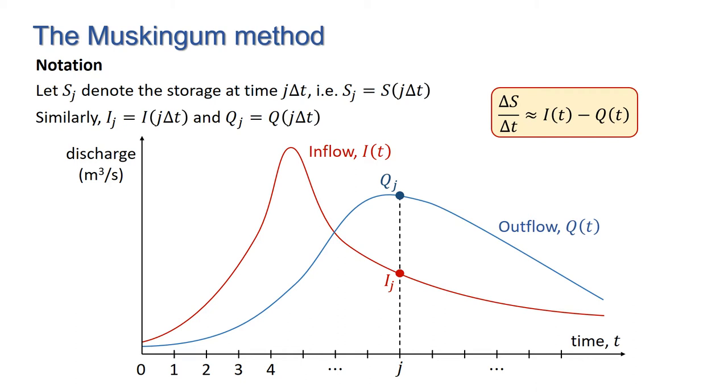We're going to derive a formula that allows us to calculate q at time step j plus 1 from the value of q at time step j and i at time steps j and j plus 1. Thus, provided we have a known initial outgoing discharge, then starting from time 0, we can step forward in time and find all the subsequent values of q.